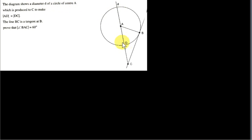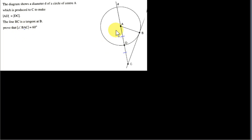The diagram shows a diameter D of a circle of center A — so this line here is the diameter. This diameter line is produced to point C to make AD equal to DC — so this distance AD is equal to DC. The line BC is a tangent at the point B. We want to prove that angle BAC is 60 degrees. BAC is the angle whose vertex is at A, formed by arms BA and AC, so we're going to prove that this angle is 60 degrees.